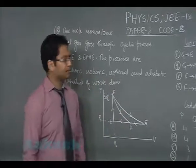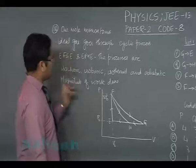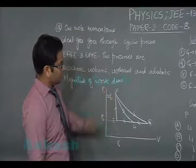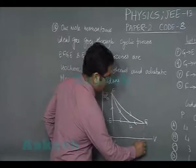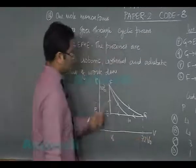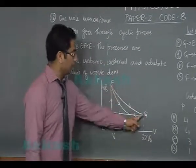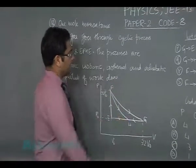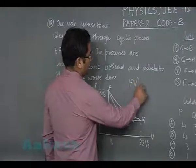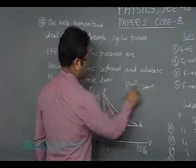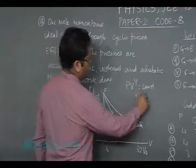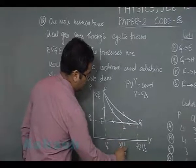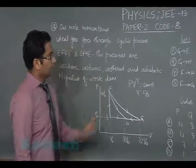We got to see the magnitude of work done. First of all, if this is V naught and this is 32 P naught, this has to be 32 V naught, because for F and G, P1 V1 equals P2 V2. Then for H, we could see PV gamma is constant, that's for FH, where gamma is 5 by 3. On calculation you would get H volume as 8 V naught, so everything has been found out.